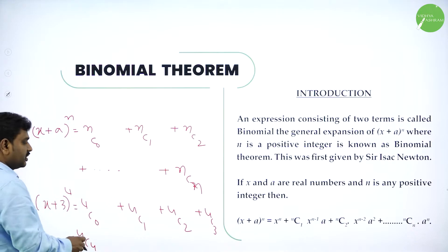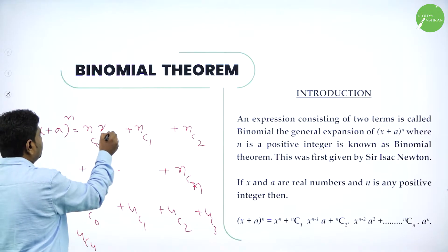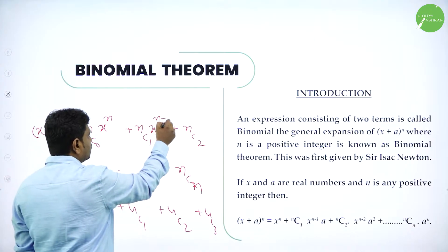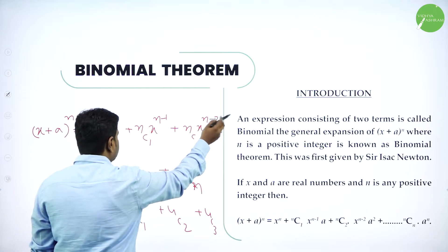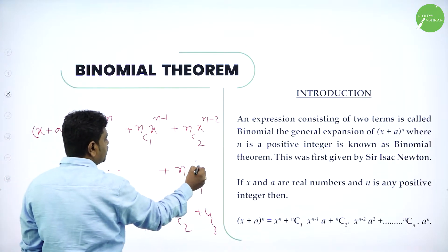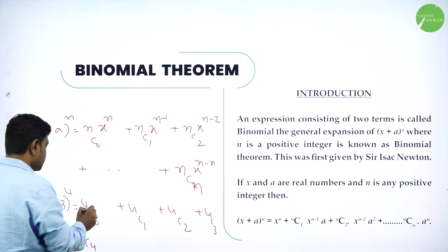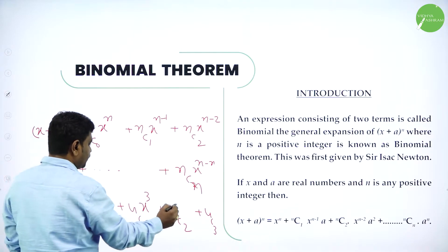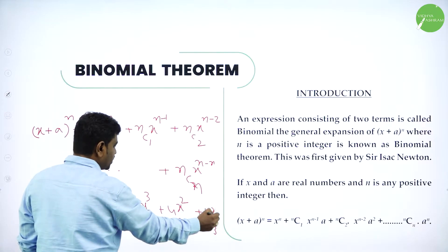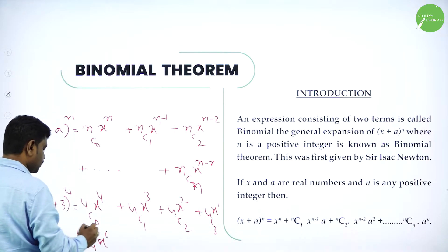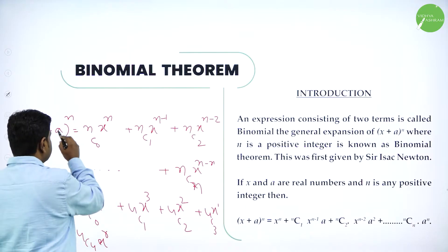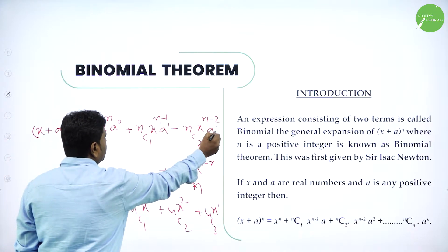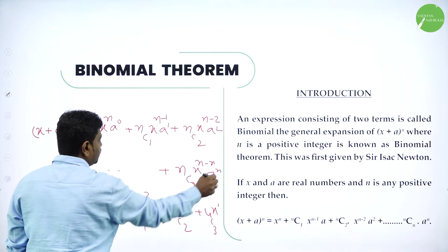Both the coefficients and powers should balance. The first term starts with power n, that is x power n, then decreases one each time: x power n minus 1, x power n minus 2, x power n minus 3, and finally x power n minus n. For power 4: x power 4, x power 3, x power 2, x power 1, then x power 0. Similarly, the second term starts with power 0 and goes on increasing: a power 0, a power 1, a power 2, last term is a power n.